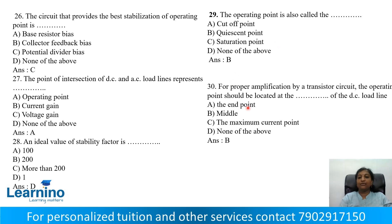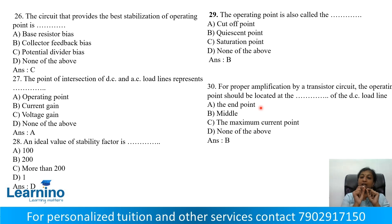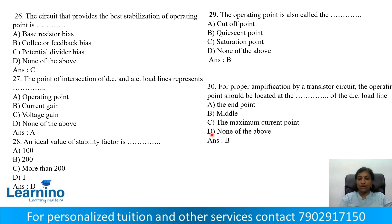Question number 30: For proper amplification by a transistor circuit, the operating point should be located at the dash of the DC load line. The operating point is selected on the DC load line. Option A: End point, Option B: Middle, Option C: Maximum current point. The operating point is selected at the middle of the DC load line.